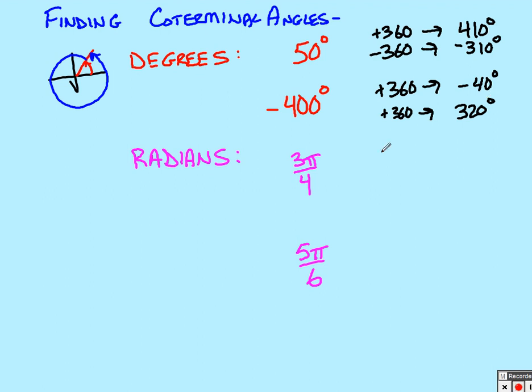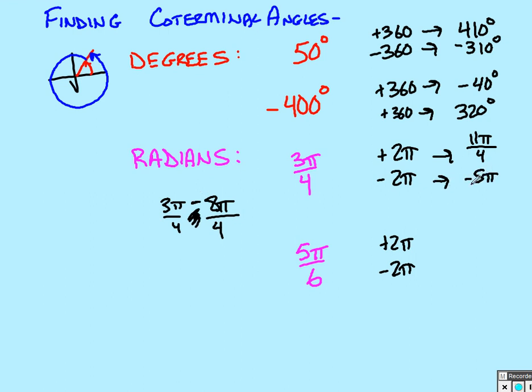Now, for radians, all we're going to do, we need to add 2π or subtract 2π because we said that 2π is what is equivalent radians as 360 is to degrees. So for this, for 3π over 4, if I want to add 2π, we need to make common denominators so that denominator would be 4, meaning this would become 8, giving me 11π over 4 as my coterminal angle.